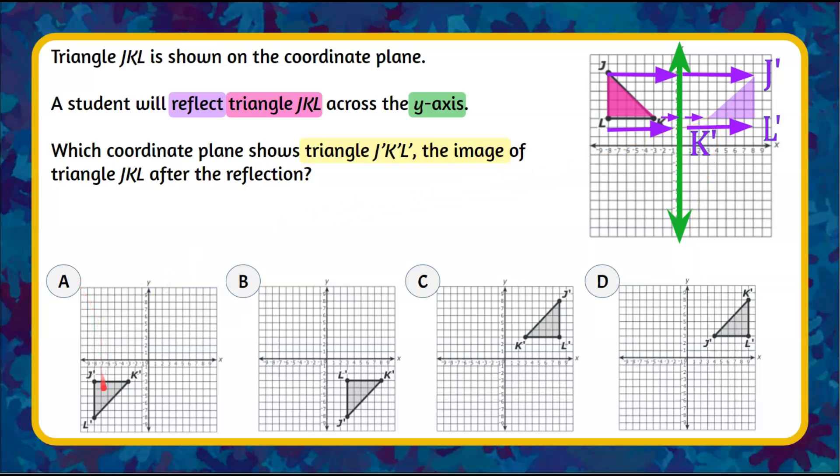I can see that A has an image in the third quadrant, not in the first quadrant, so we can eliminate answer choice A. Answer choice B has an image in the fourth quadrant, so we can eliminate that. And then I see that C and D both have images in the first quadrant as I do. So let's see what the differences are.